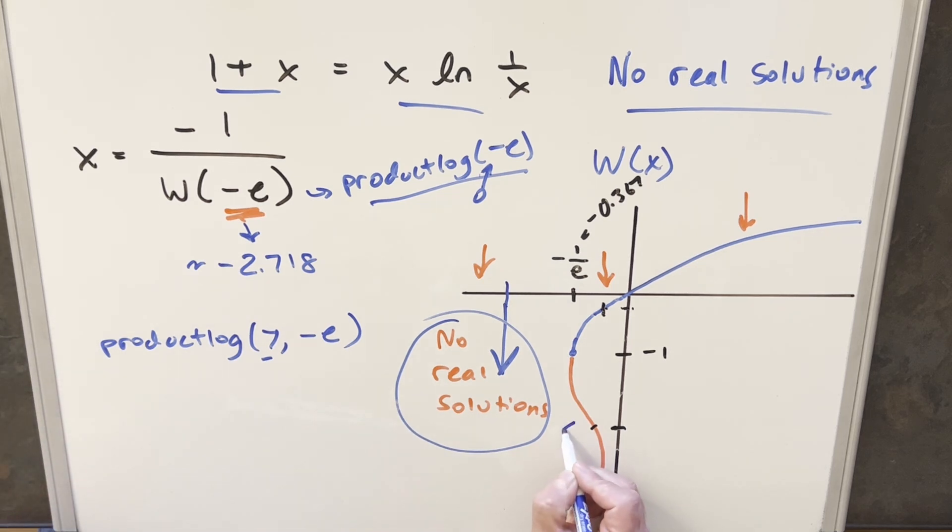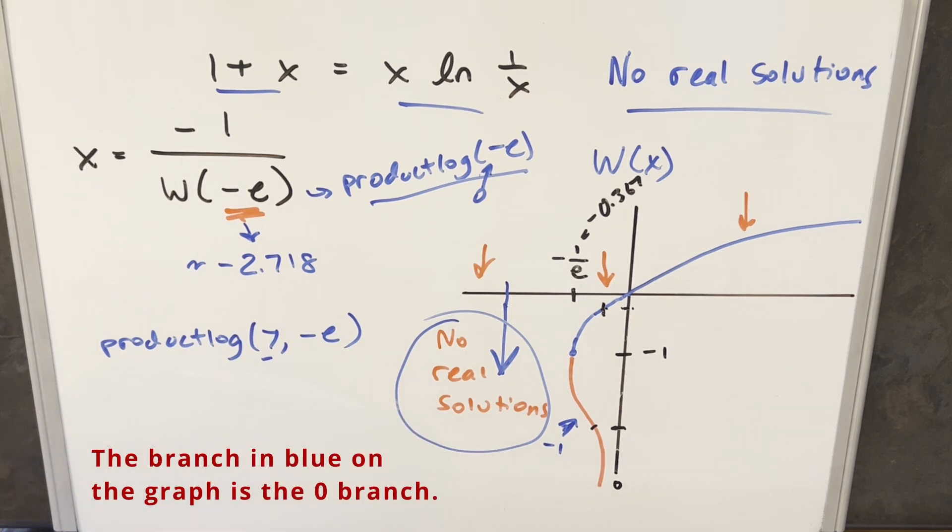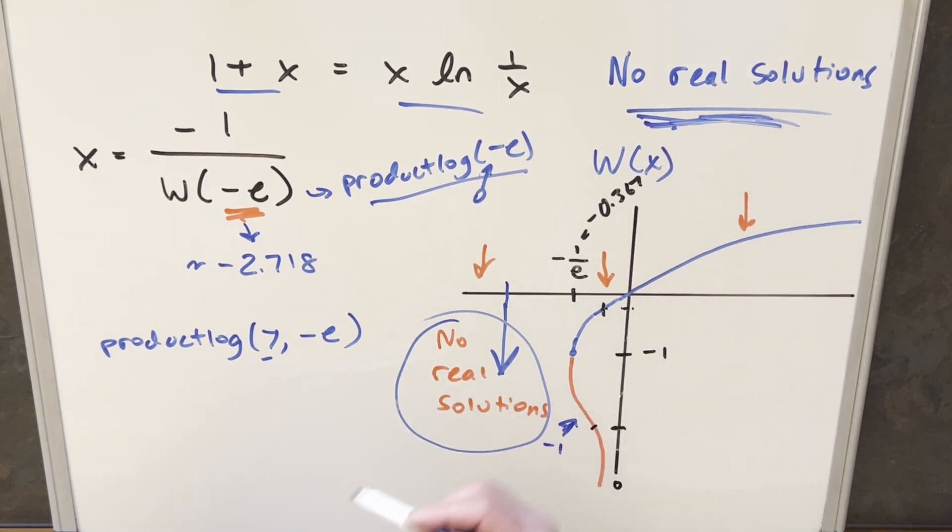So you could try that one, it's going to be another complex solution. So you can mess around with that and get a bunch of complex solutions. But as far as getting a solution in the real numbers, unfortunately, again, no real solutions.